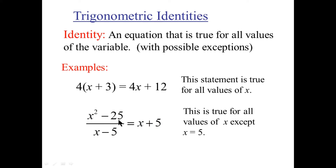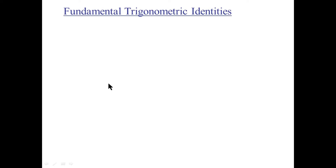This is true because if you factored x squared minus 25, you'd have x minus 5 times x plus 5, and the x minus 5 would cancel, leaving x plus 5, which is what the right side is. So this is a very basic concept of an identity. The fundamental trig identities — we're going to look at fundamental identities used to establish more complex identities. The fundamentals are the basic ones.